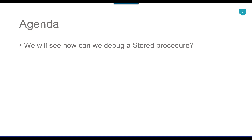Debugging is one of the most important steps in any programming language. Whether you are writing code in C#.NET, Java, Python, or any other language, debugging is a must. When you debug your code, you can easily identify the values assigned to different variables after each line is executed, and you can check the data in tables, views, or data being returned from variables, functions, or stored procedures.